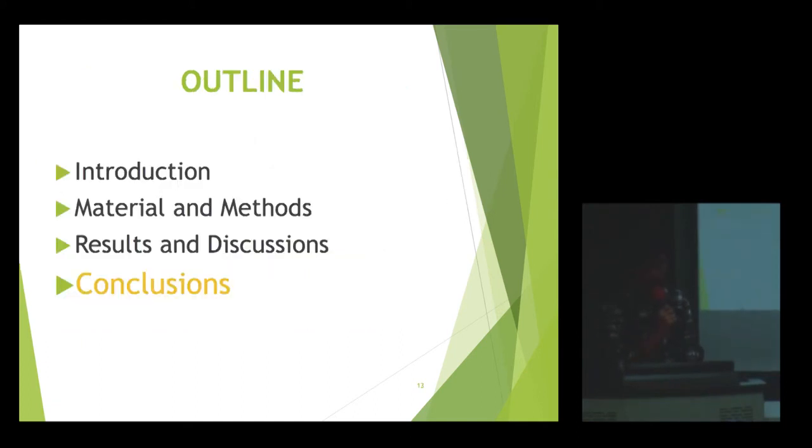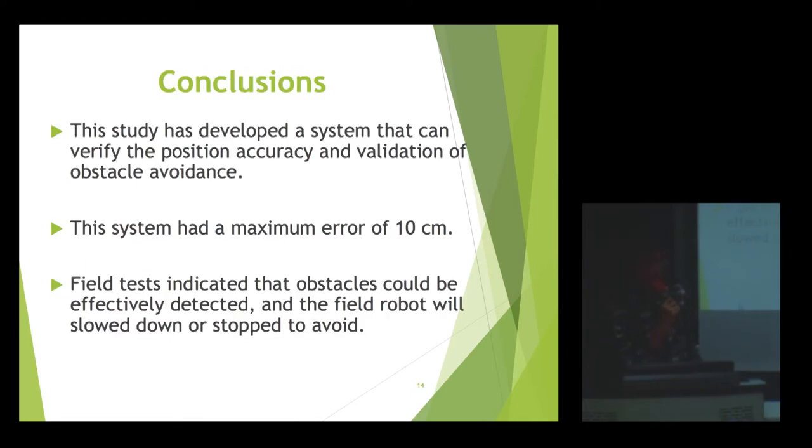And now is my conclusion. This study has developed a system that can provide precision accuracy. Just like what I said before, the system has the max error of 10 centimeters. And the test indicates that the obstacle could be preventively detected, and the robot will slow down or start to avoid the obstacle.